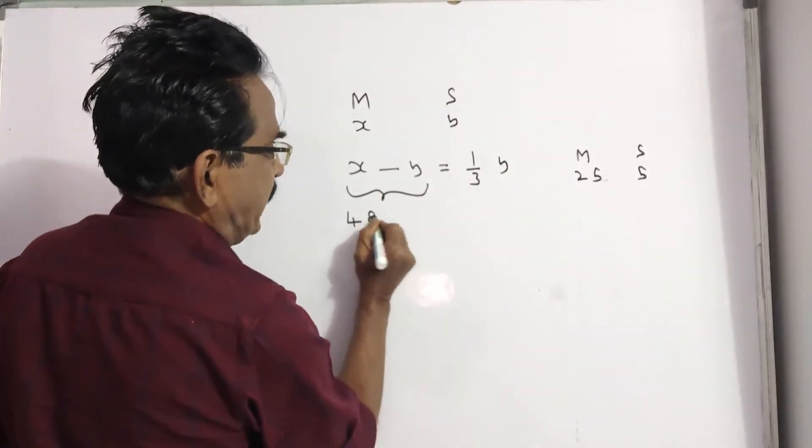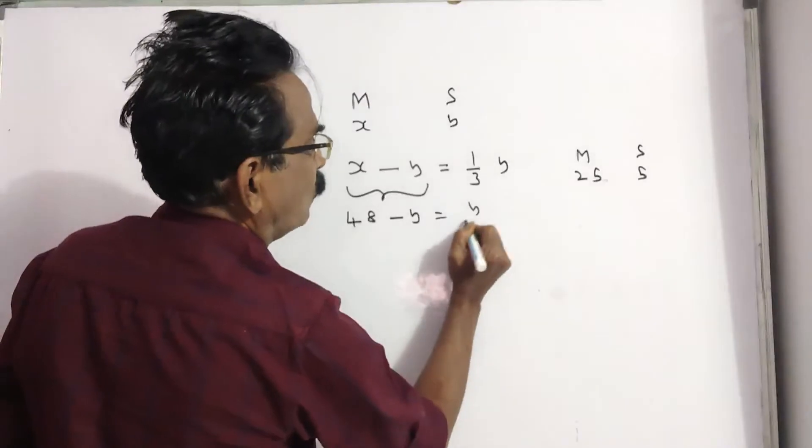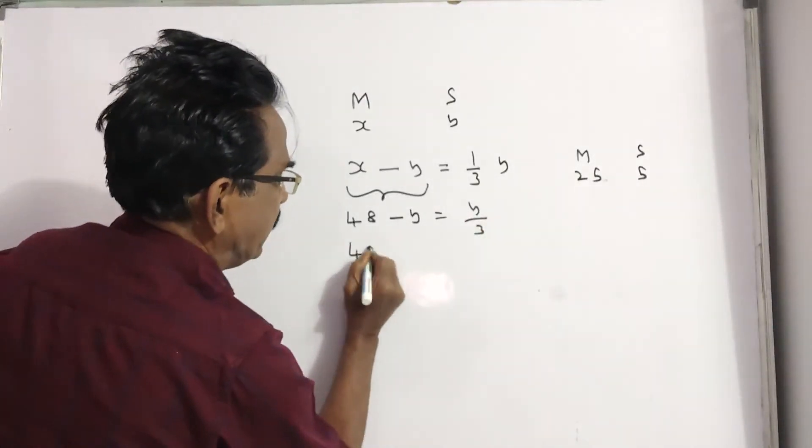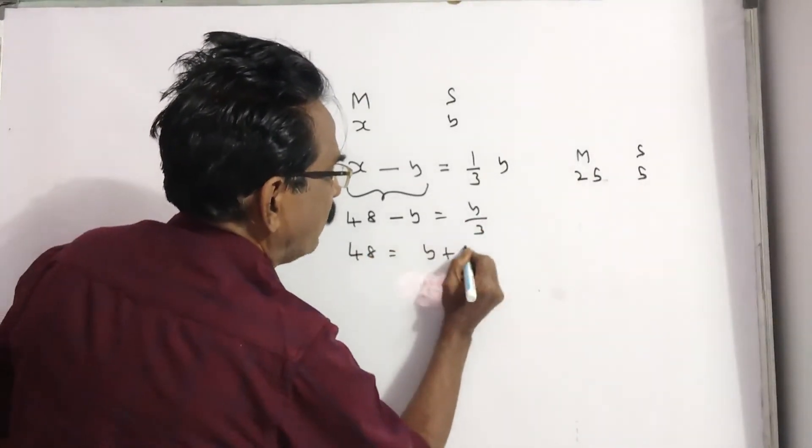X is given, man's age is 48. 48 minus y is equal to y by 3. 48 is equal to y plus y by 3.